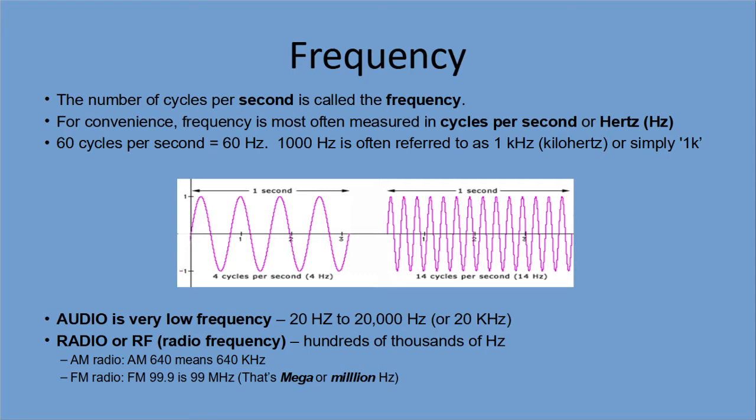AM radio, for example, is in kilohertz — 640 kilohertz, or that would be 0.640 megahertz. FM radio, again, is in megahertz.